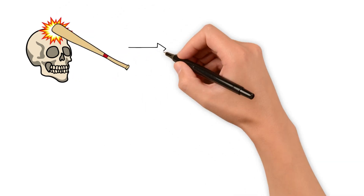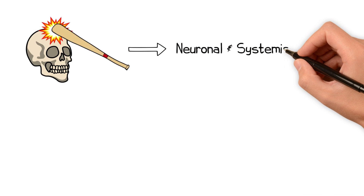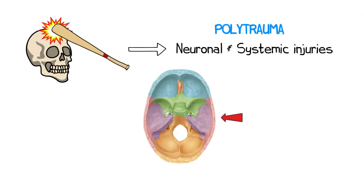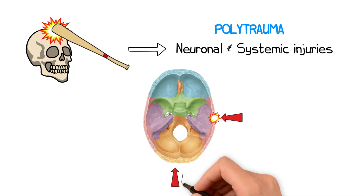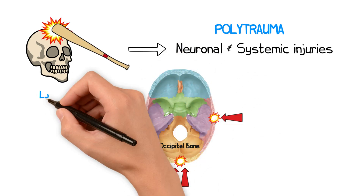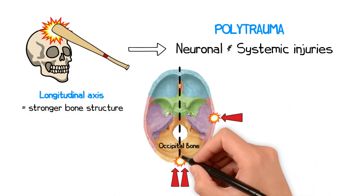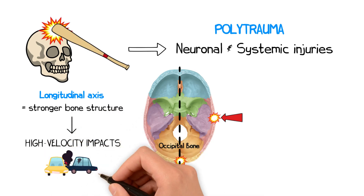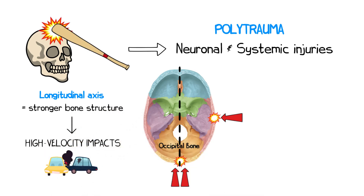Temporal bone fractures typically result from high energy impacts to the skull, often leading to concurrent life-threatening neuronal and systemic injuries due to polytrauma. Fractures from a lateral blow do not require the same magnitude of force as those to the occipital bone, though can still lead to significant complications. In contrast, blows to the occipital bone generally require greater force to cause a temporal bone fracture due to the head's anatomical shape and stronger bone structure in the longitudinal axis. Fractures here often occur from high velocity impacts such as road traffic accidents, which can also cause concurrent temporal bone fractures.